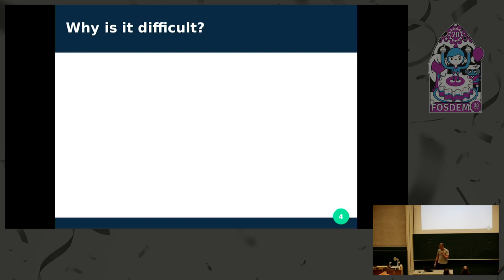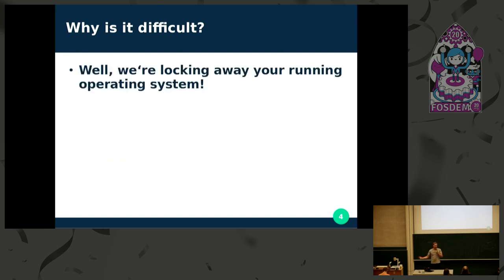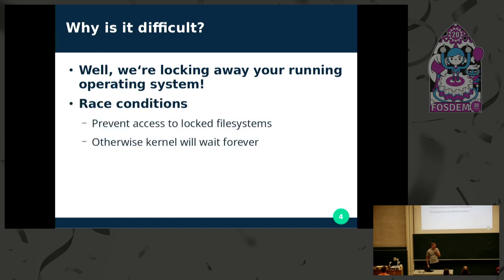First of all, why is this even difficult? Well, we're locking away your running operating system. If this doesn't sound difficult to you, lucky you — it was difficult to me. There are all kinds of race conditions that can happen. Since we've locked away all of your file systems, the kernel might want to access it because some process is requesting something like a file on your system. We have to make sure that we really know what happens before we enter suspend mode and after we resume, and that only the processes access data once we have unlocked the system again.